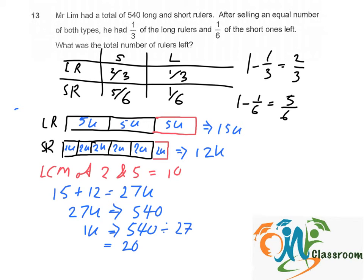One unit equals twenty. To find the total number of rulers left, that will be just the units in red: five plus two equals seven units. So seven units equals twenty times seven, which is one hundred and forty rulers left.